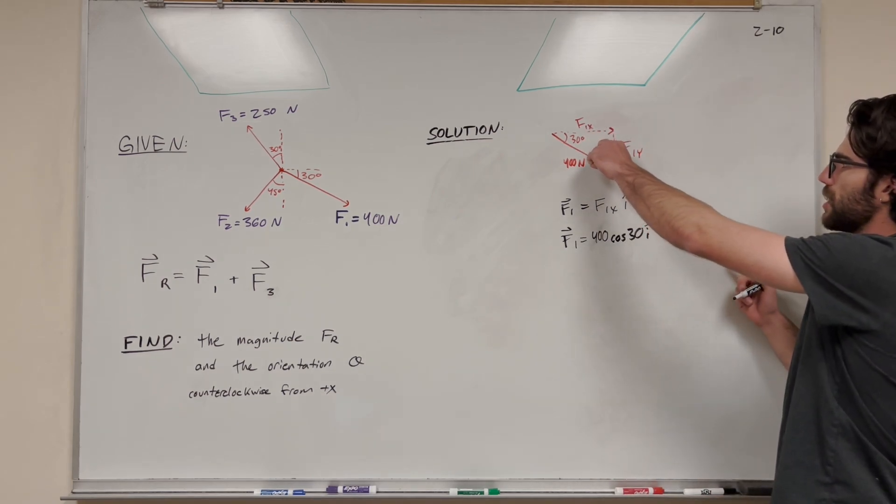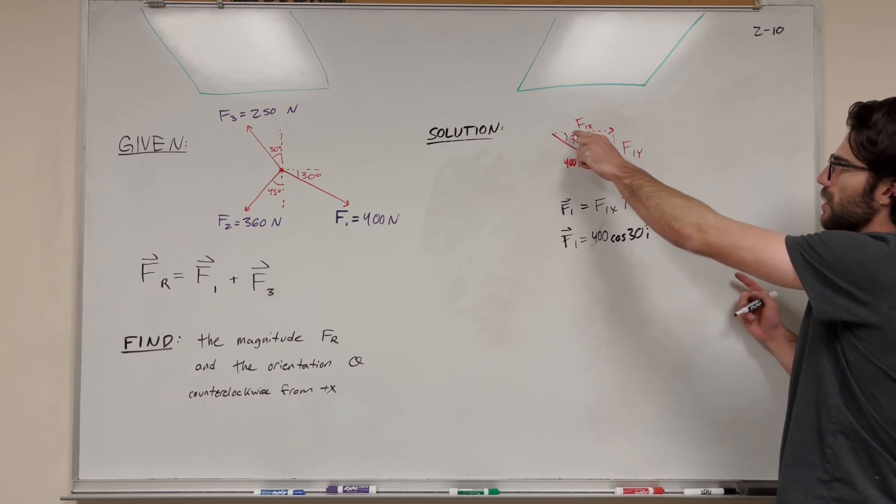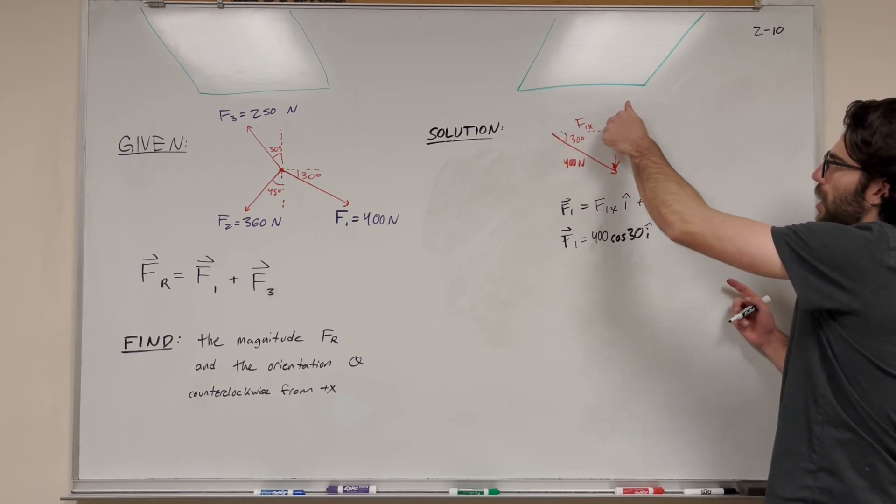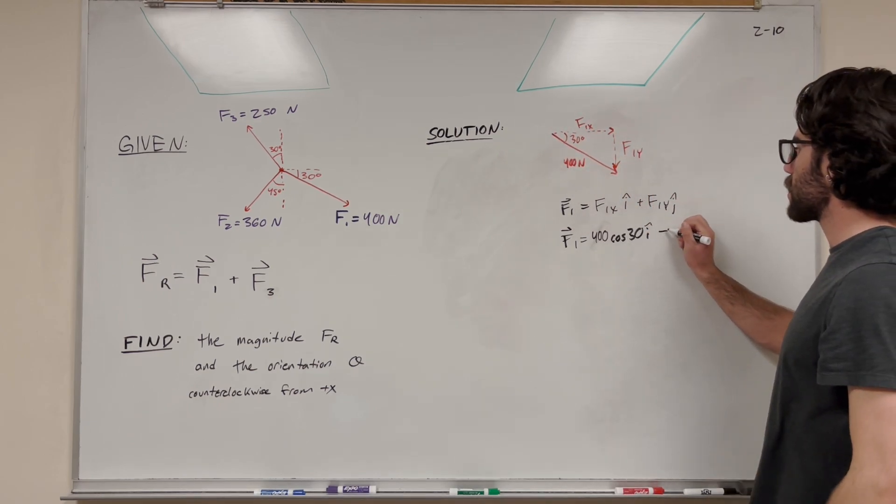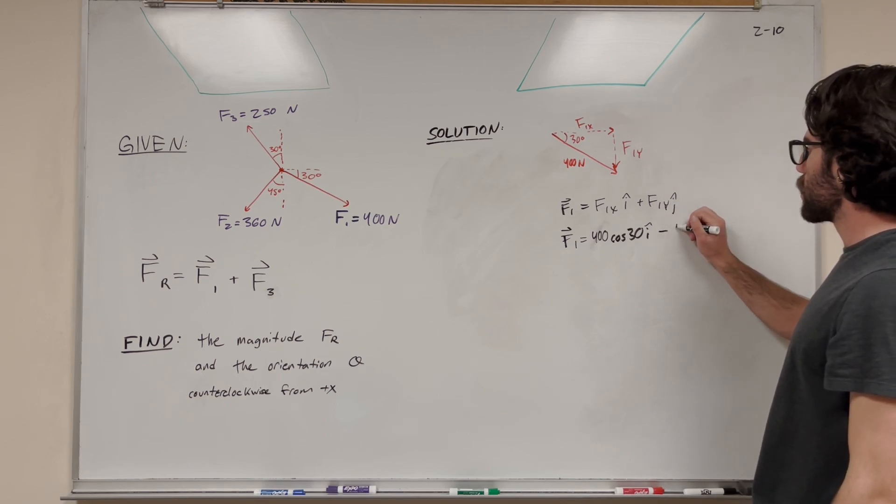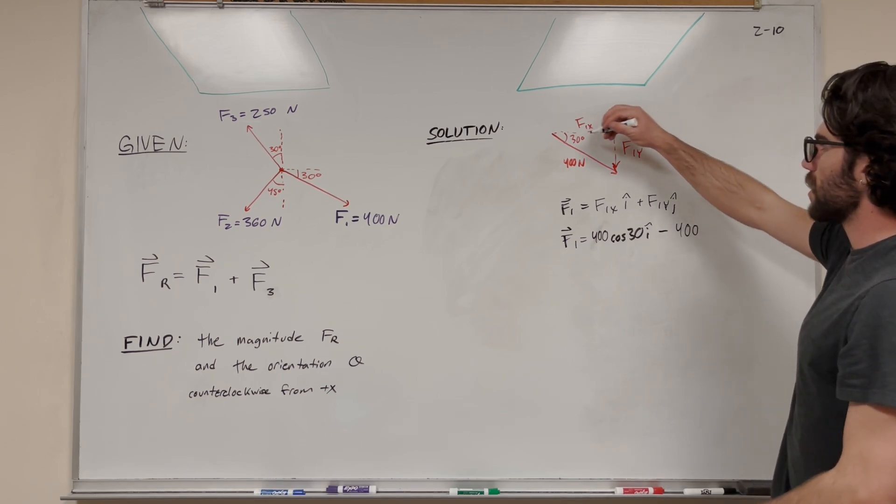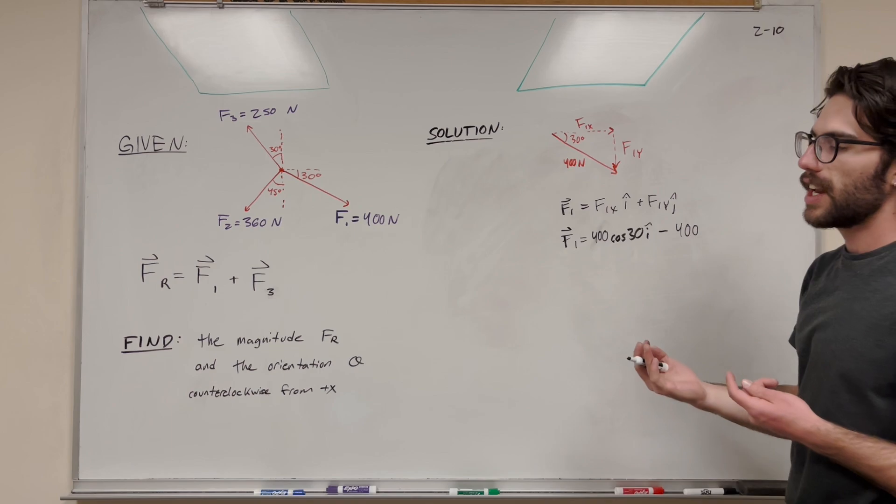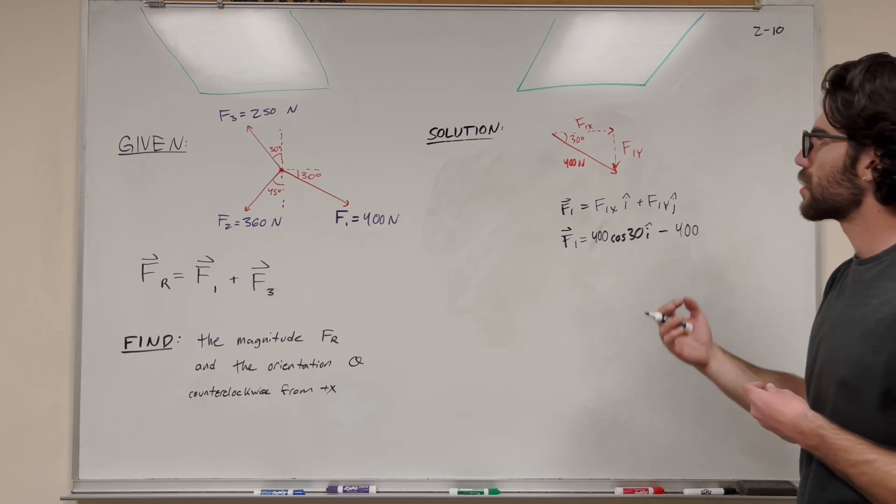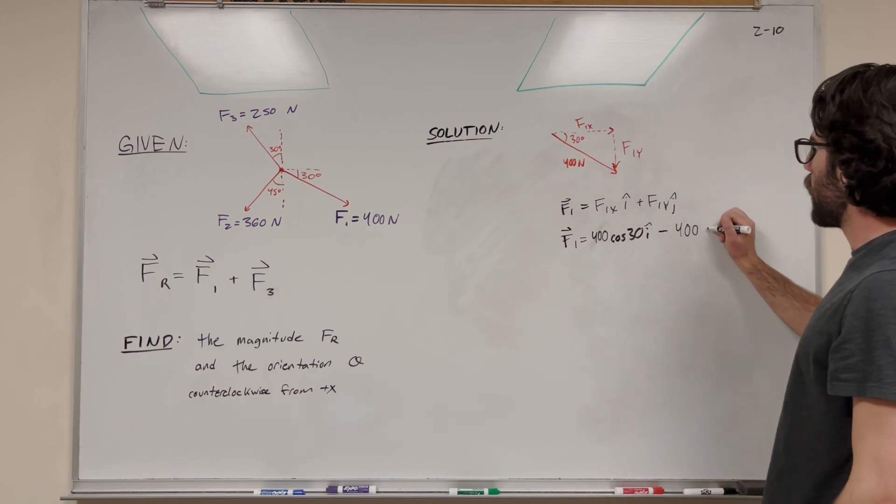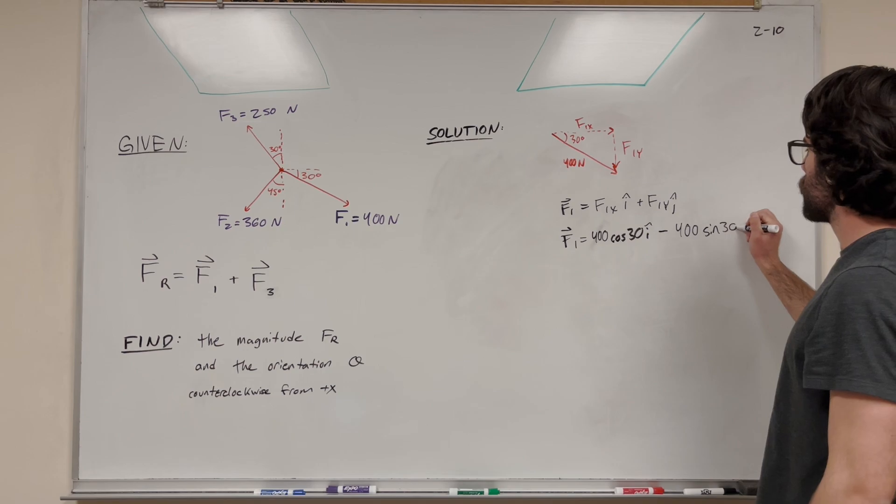For F1y, we see this is in the negative direction. The x component goes in the positive x direction, but we need to subtract this one because it's going in the negative y direction. So we do 400 times sine of 30. We use sine because it's the opposite side.